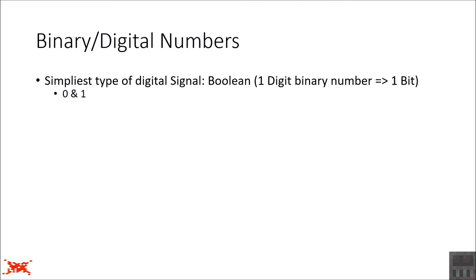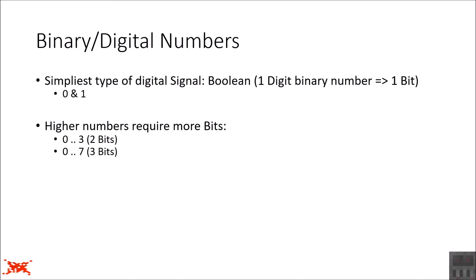Two bits would be a two-digit binary number, three bits a three-digit binary number, and so on. Higher numbers can be represented by using more bits. With two bits you can go from 0 up to 3; with 3 bits from 0 to 7; with 4 bits from 0 up to 15 — which, as you can see, is the same as analog redstone circuitry. So analog redstone circuitry is actually 4-bit digital signal processing, just as a side note.